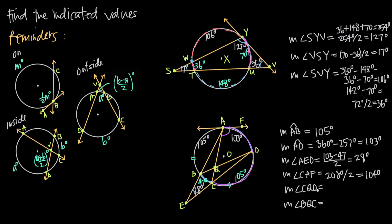For the measure of angle CQD, the vertex is inside the circle. When the vertex is inside, the angle equals the sum of the inscribed arc and the inscribed arc of the vertical angle, divided by 2. Arc CD is 105 degrees and arc AB (the vertical angle's arc) is also 105 degrees. So: 105 plus 105 divided by 2 equals 105 degrees.